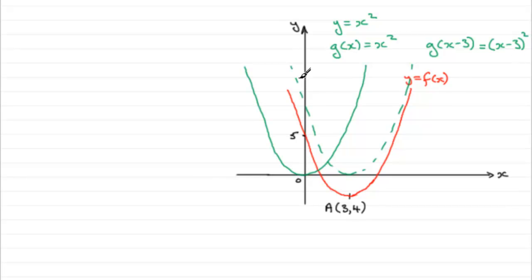Now when I've got that graph there, in order to pull it four places downwards, I've now got to subtract 4 from this function. So in other words, the red graph, y equals f of x, will be x minus 3 all squared and then minus 4. So this would be our equation: y equals x minus 3 all squared minus 4.